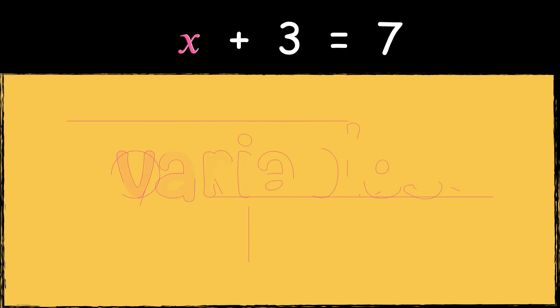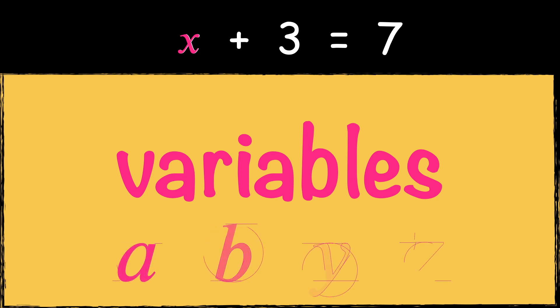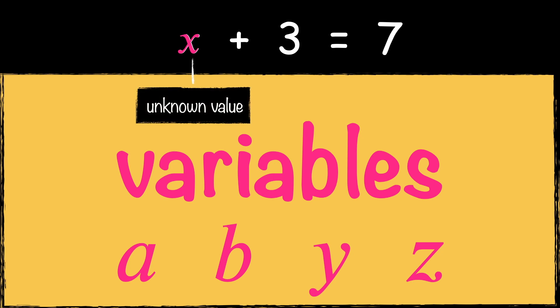Let's have a look at variables. Any letter can act as a variable, not just X. Letters like A, B, Y, and Z are frequently used to symbolize variables. Variables are the unknown values that we're trying to solve for.